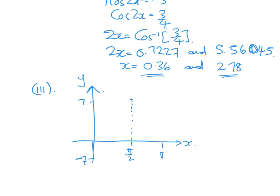The graph goes up and then comes back down. The x-intercepts are at x ≈ 0.36 and x ≈ 2.78, marked on the graph. The sketch is not perfectly accurate but shows the correct shape: starting at negative 1 on the y-axis, peaking at 7 when x = π/2, crossing the x-axis at 0.36 and 2.78.